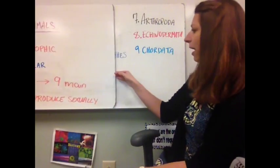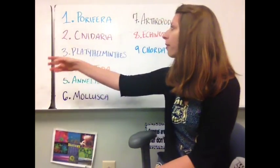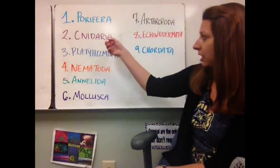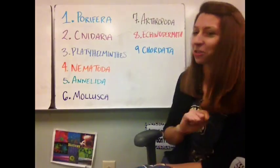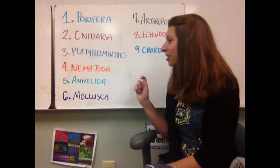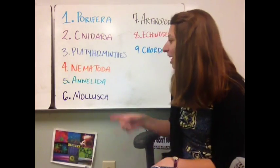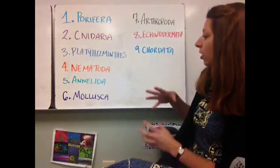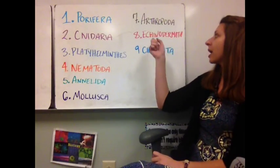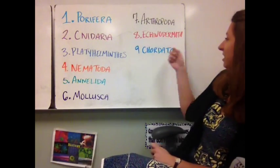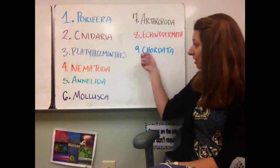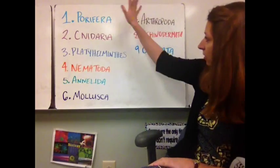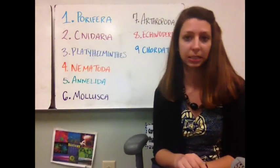So what are these nine main phyla? First we have Porifera, which are our sponges. Then we have Cnidaria, Platyhelminthes which are flatworms, Nematoda which are roundworms, Annelids like our leeches, Mollusca which are molluscs, Arthropoda, Echinoderms, and Chordata. We're in this last category — phylum Chordata — with all the chordates. Everything else is going to be our invertebrates, and that's what we're going to be looking at today.